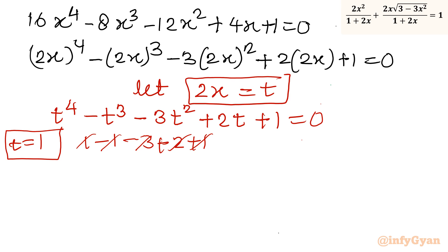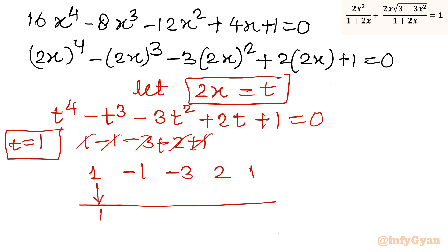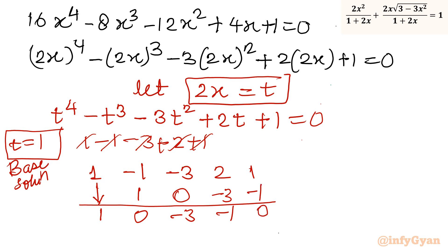Using synthetic division with root t = 1 and coefficients 1, −1, −3, 2, 1, we carry down: 1, 0, −3, −1, remainder 0. The remaining cubic factor has coefficients 1, 0, −3, −1, giving t³ − 3t − 1 = 0.